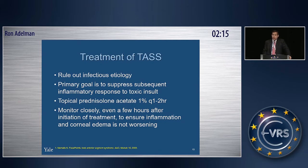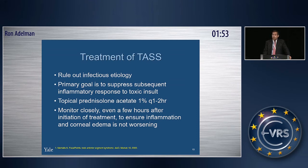Treatment of toxic anterior segment syndrome is different from endophthalmitis. The first and most important step is to rule out infection. The primary goal is to decrease inflammation by giving aggressive steroids. Since the two conditions are sometimes difficult to distinguish, after giving steroids you must follow the patient very carefully over a few hours to ensure symptoms and signs are improving. If they worsen, that may indicate endophthalmitis.